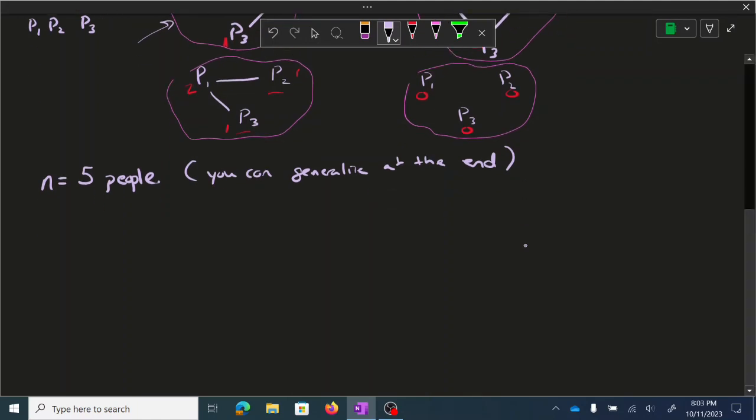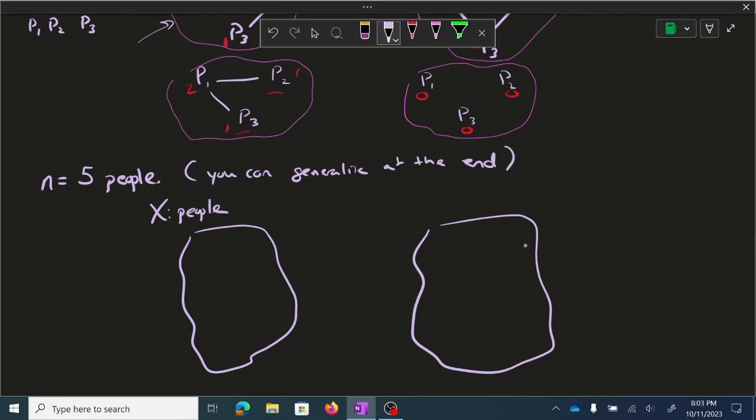So first off, we want to set up our x and y sets because we are in the pigeonhole principles section. And x is going to be people. And y is the number of handshakes. So we have one, two, three, four, five people. And actually, I'm going to label them P1 through P5. And the number of handshakes. Well, this one's going to take a little bit of thought of what the numbers are here.